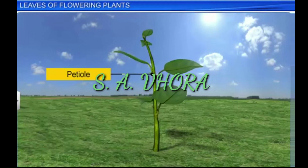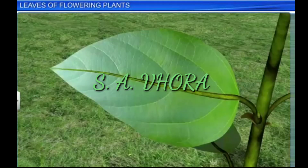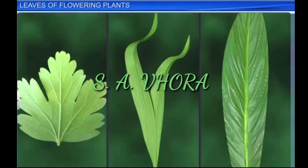The petiole is the stalk that attaches the leaf blade to the stem and is able to twist the leaf to face the sun. The petiole is the slender stem that supports the blade of a leaf. The petiole holds the leaf blade to light. Long, thin, and flexible, the petiole allows the leaf blade to flutter in the wind, thereby cooling the leaf and bringing fresh air to the leaf surface.